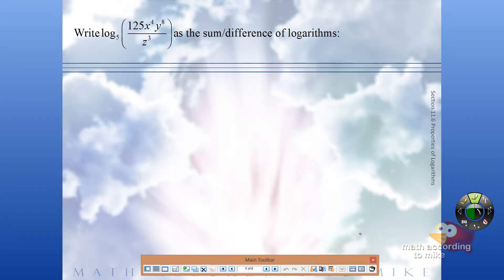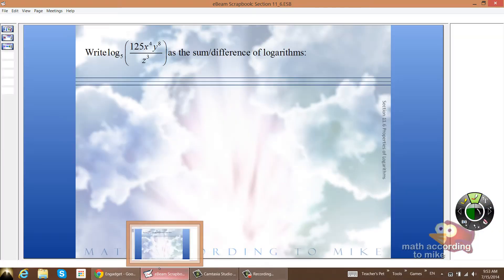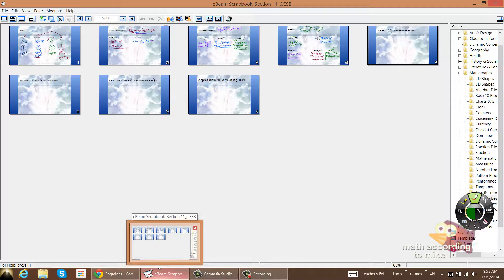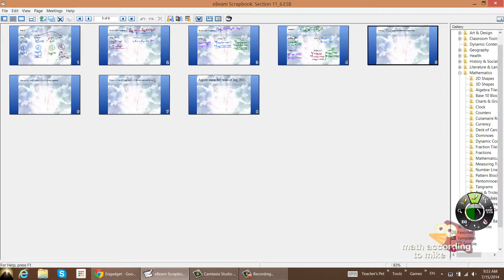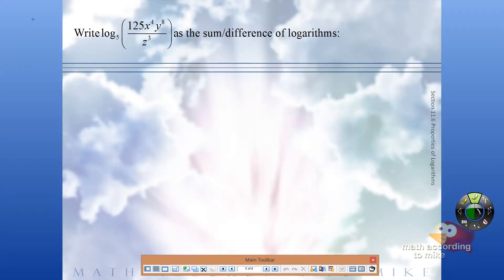So for this one we're going to break it down as much as we can. The outermost operation is a quotient. Quotient rule says log of the numerator minus log of the denominator. Don't lose your base on the logarithm.